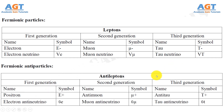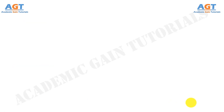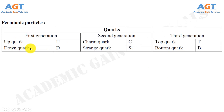Similarly, the anti-leptons are fermionic anti-particles, where the first generation of anti-leptons includes positron and electron anti-neutrino. The second generation anti-leptons includes anti-muon and muon anti-neutrino, and the third generation anti-leptons includes the anti-tau and tau anti-neutrino. In a similar way, the first generation of fermionic quark particles includes up and down quarks. The second generation includes charm quarks and strange quarks, and the third generation includes the top and bottom quarks.